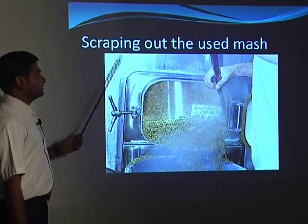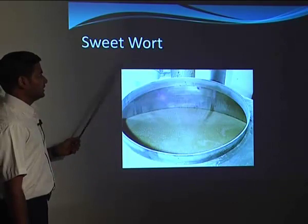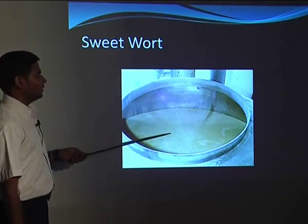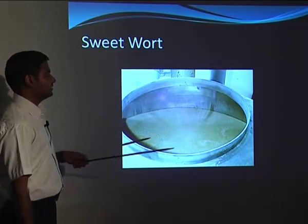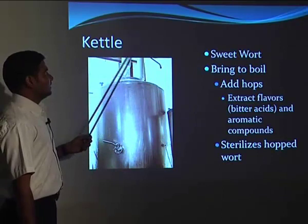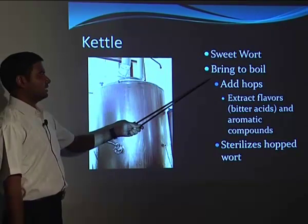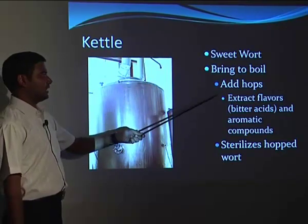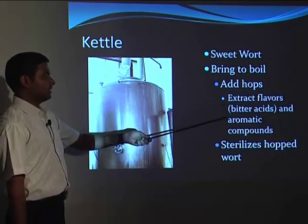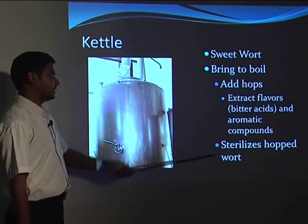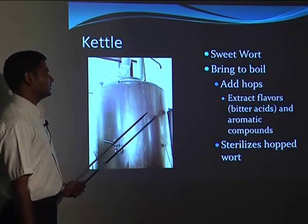The used mash — spent malt — acts as a filtering bed for the sweetwort and is then scraped out. The sweetwort, which contains maltose and amino acids, goes to the kettle. It is brought to a boil and hops are added to extract flavor and aromatic compounds and to sterilize the hopped wort in this kettle.